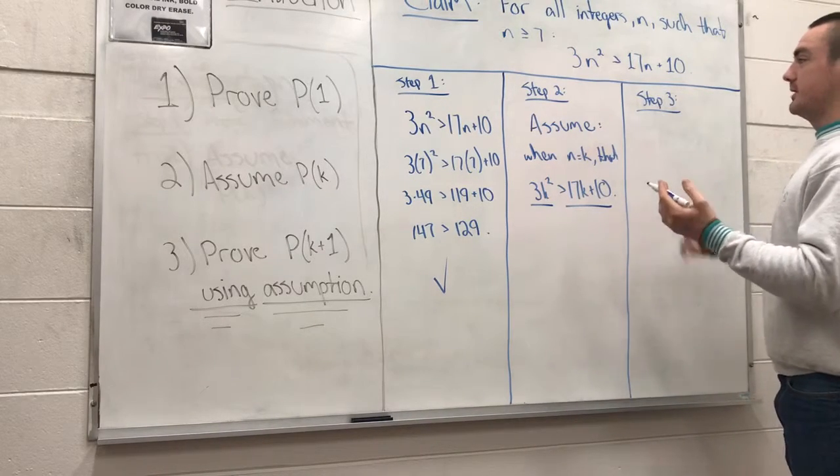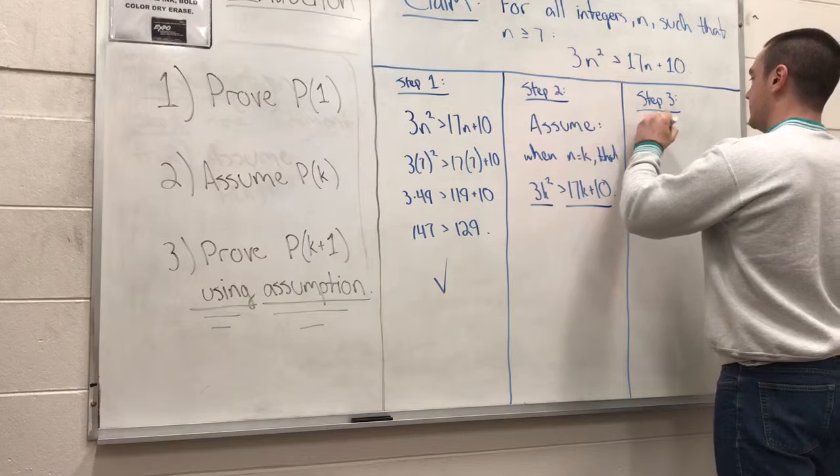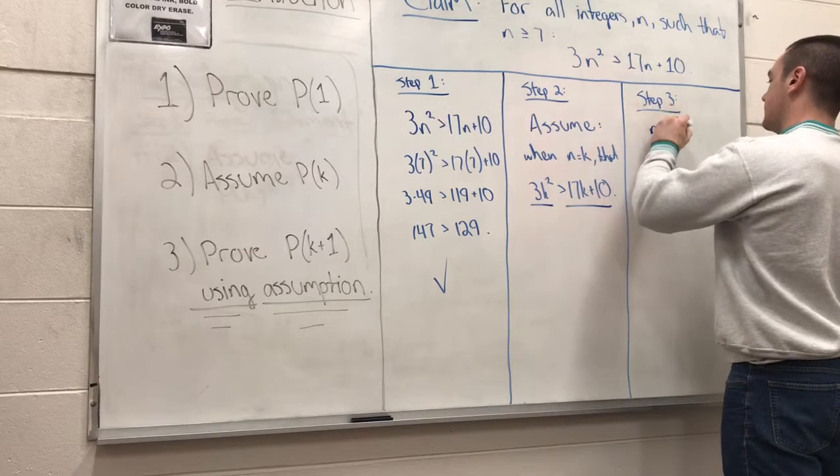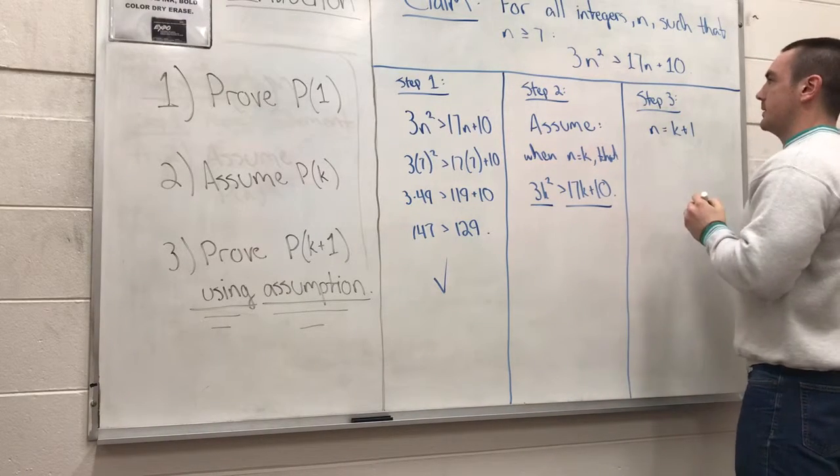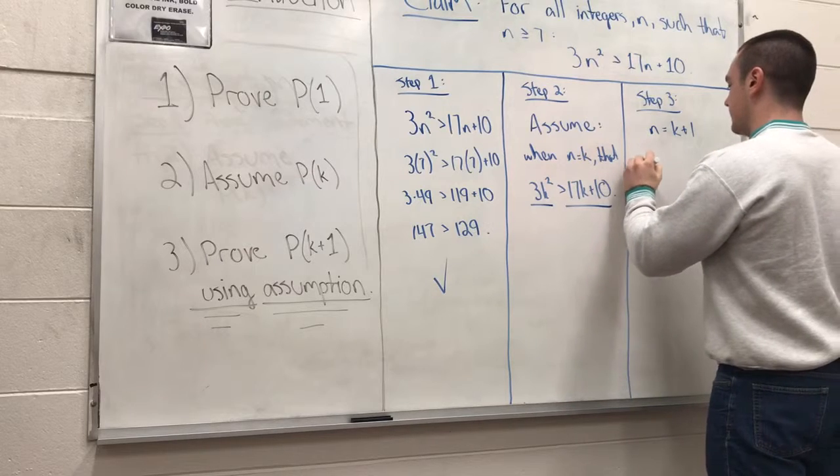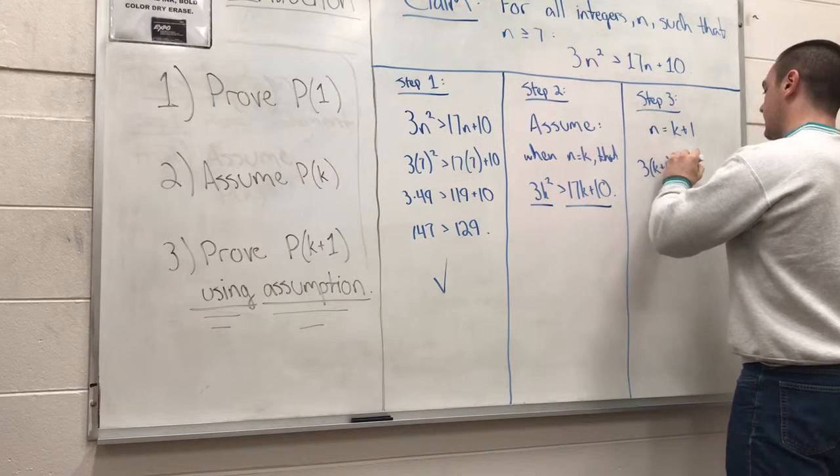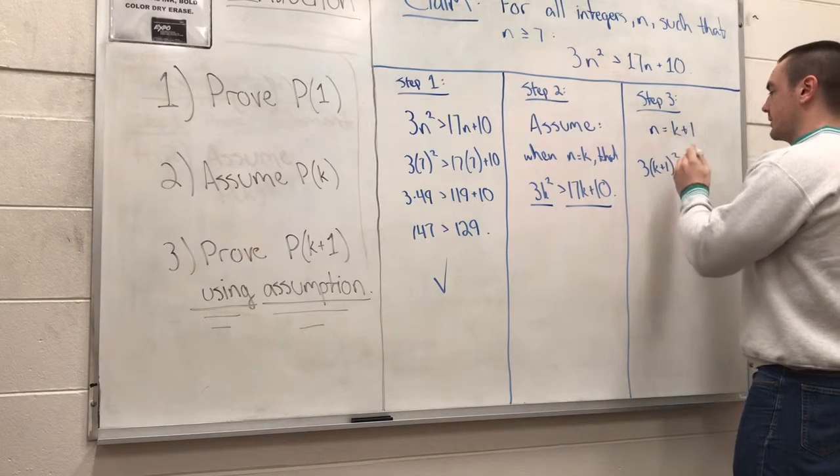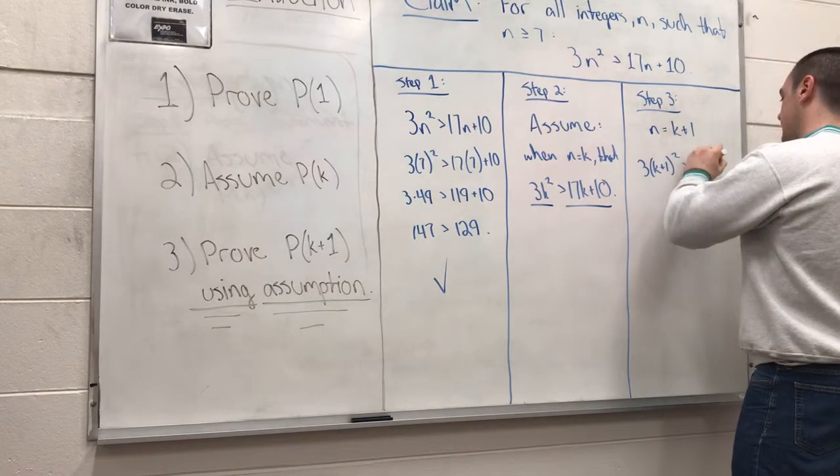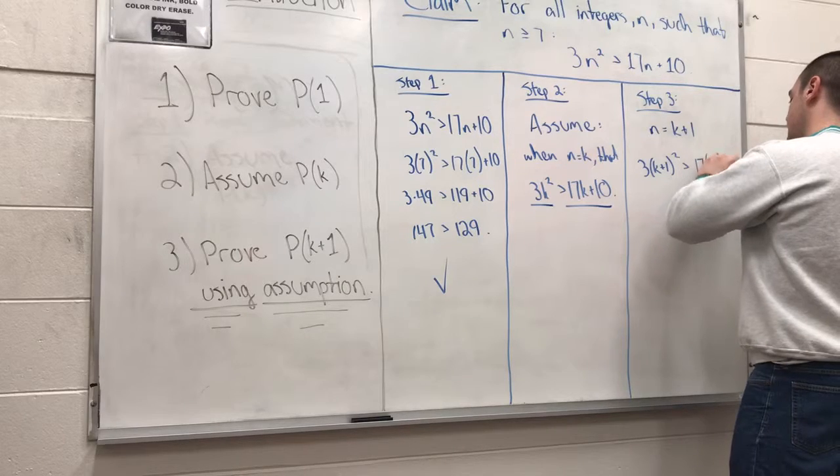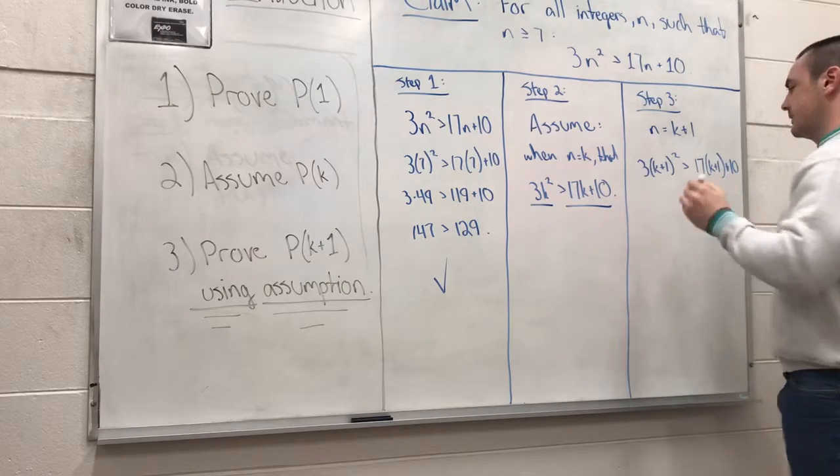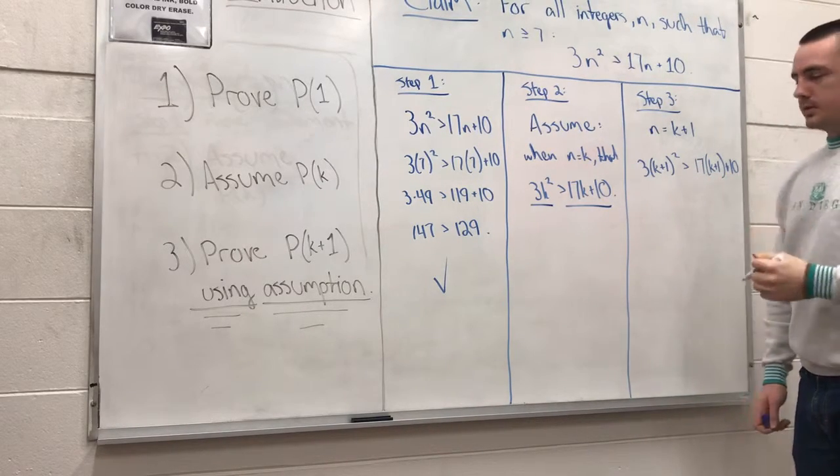Let's go ahead and plug k plus 1 in wherever we have an n. Now we have n equals k plus 1. It's going to look something like this: 3 times (k plus 1) squared is strictly greater than 17 times (k plus 1) plus 10.